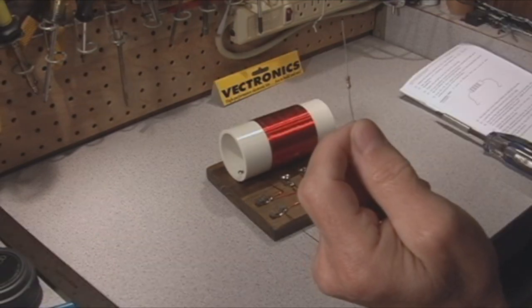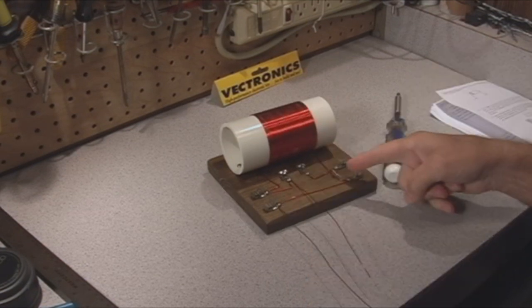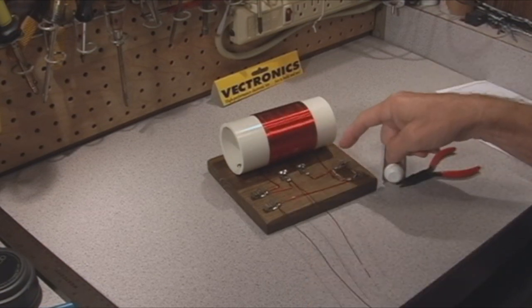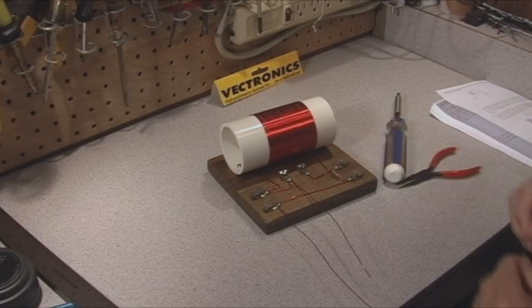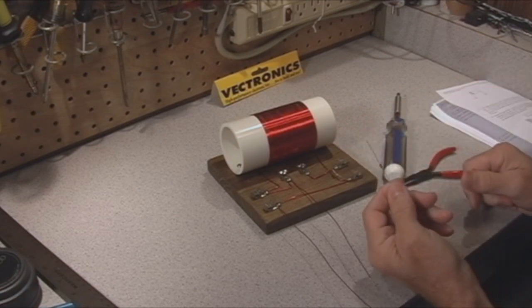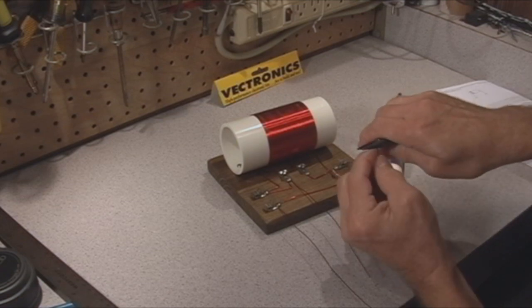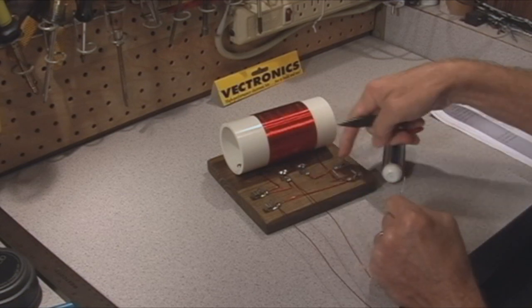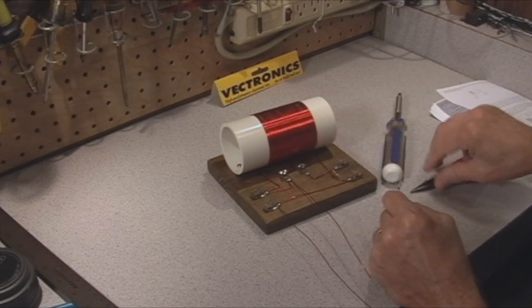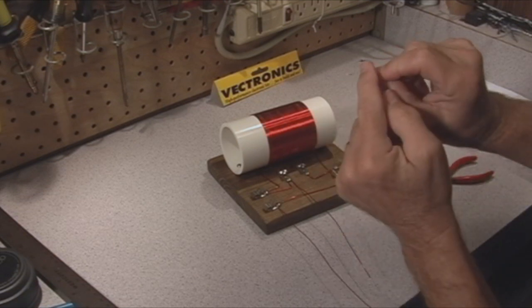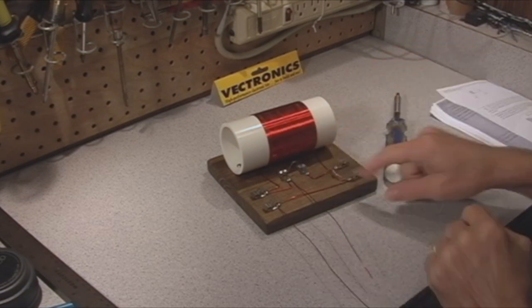Our next step is to take the 27k ohm resistor and put it across the speaker clips. A resistor has no polarity so it doesn't matter which end goes to which clip. However, a diode is polarized. We take the germanium diode and put the cathode side of the diode into the detector clip that goes to one of the speaker clips. The cathode is the side of the diode that has a line on it.